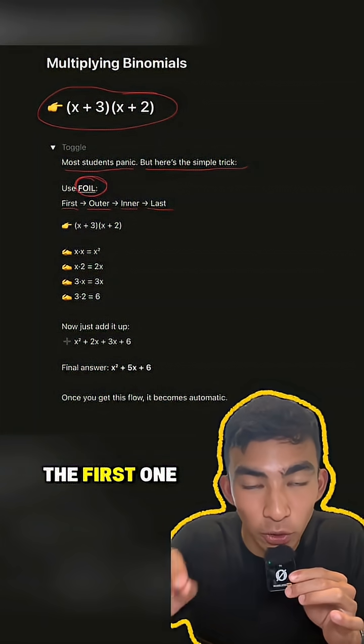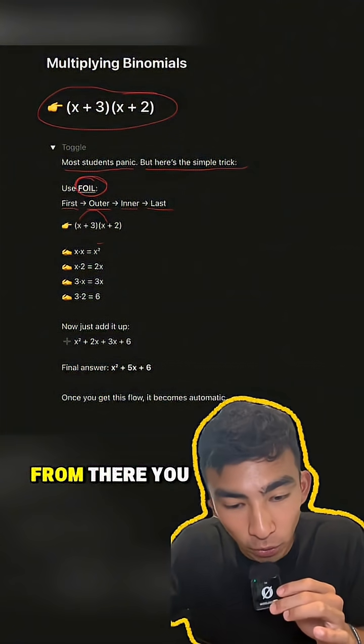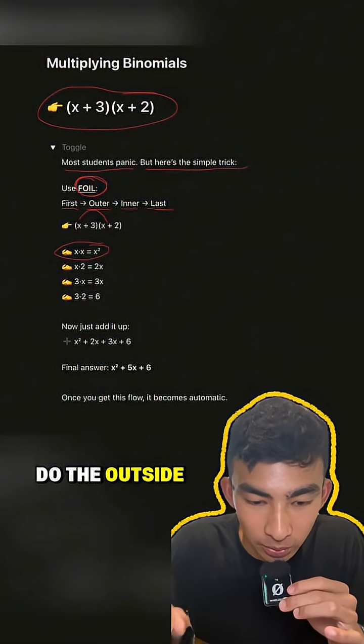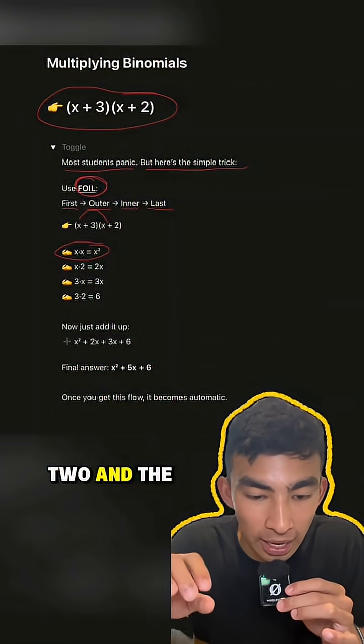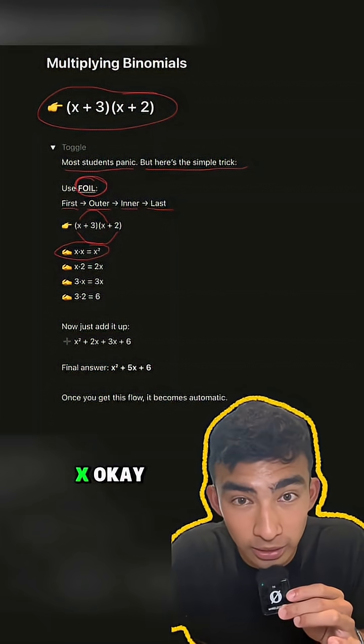So you're going to see here we do the first one is the x times the x which is going to give us the x squared there. From there you do the outside which is going to be the 2 and the x times together, so we got x times 2, which is the same as 2x.